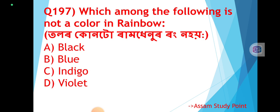Question 197: Which among the following is not a color in the rainbow? Tolar kun toe ramdhenu rang no hay — which is not a rainbow color? The correct answer is Option: Black. Black color rang toe ramdhenu rang no hay — black is not a color of the rainbow.